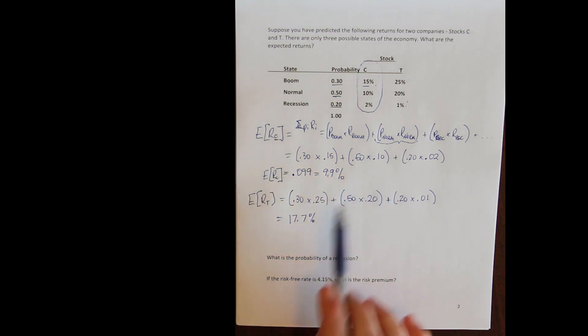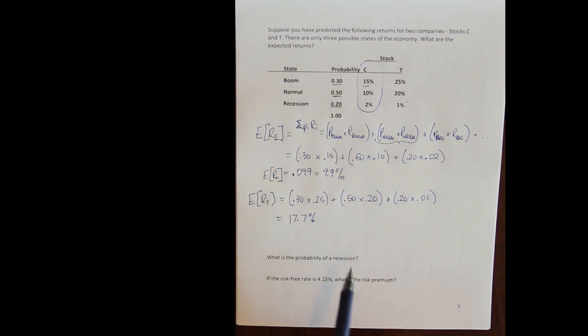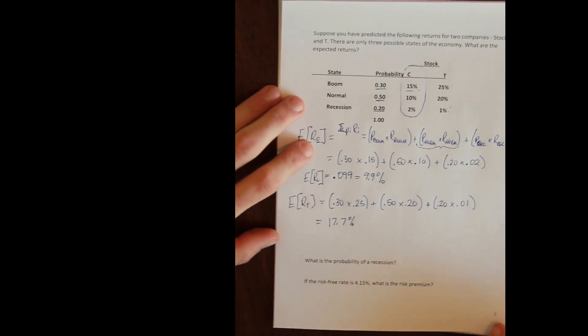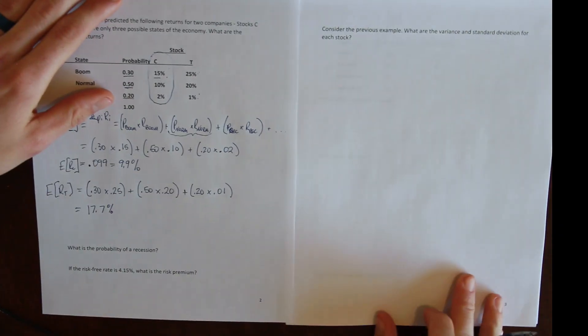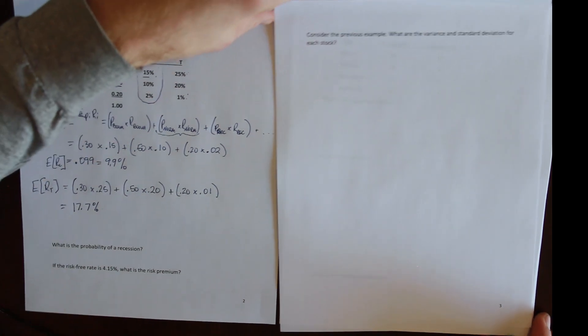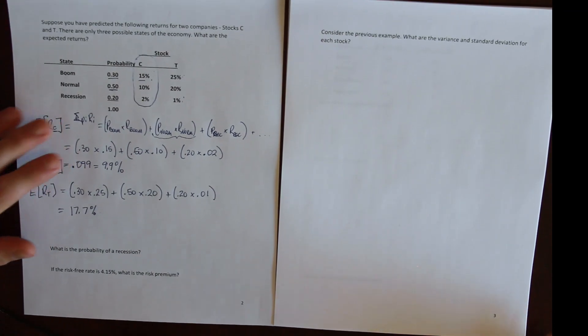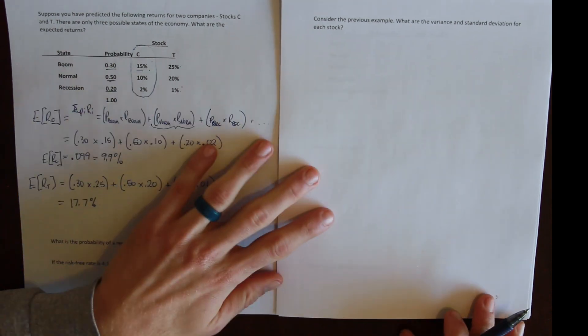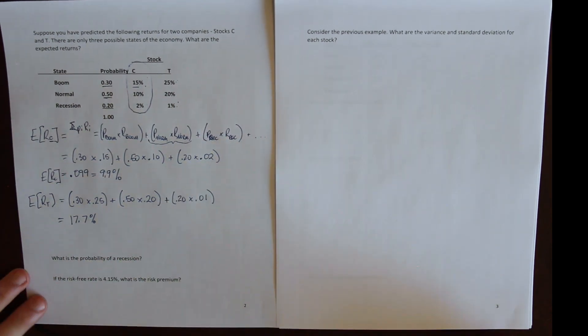We have to look at the standard deviation of both assets before we can think about which is preferable. Preference is unique to each of us — some people prefer an asset with a larger return and higher risk, others prefer lower return with lower risk. There's nothing wrong with either preference. But to even have that conversation, we need to first calculate the variance and then the standard deviation for both assets.